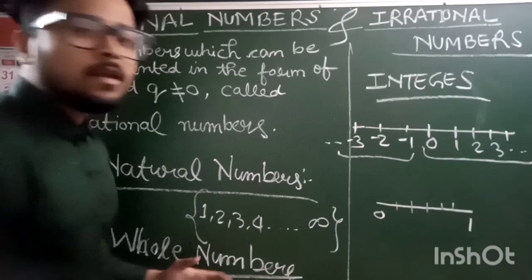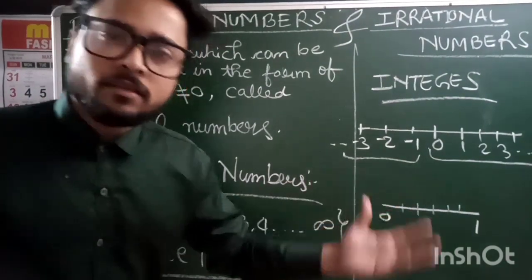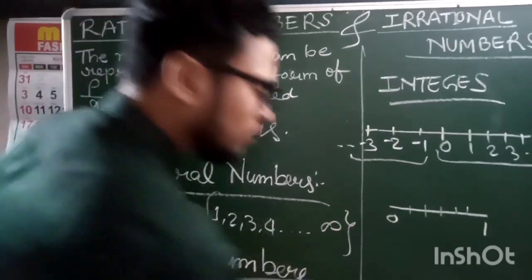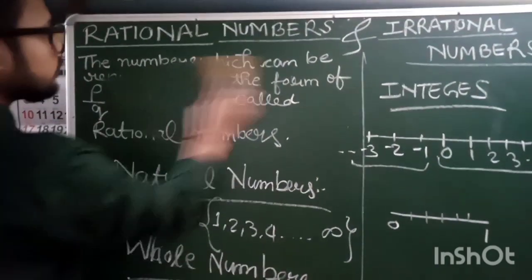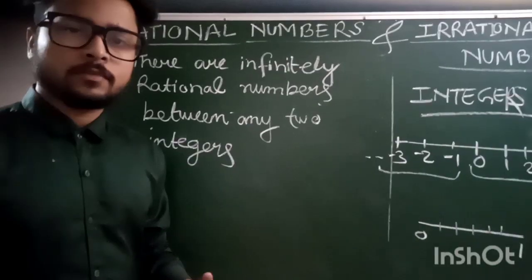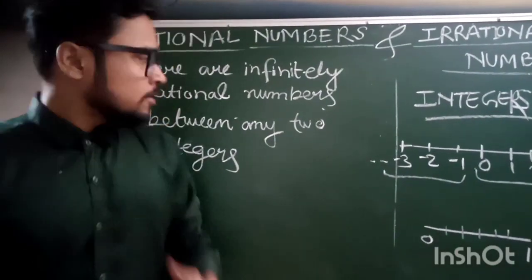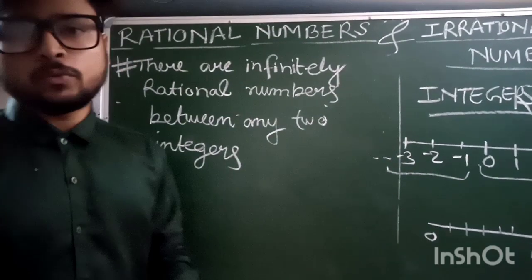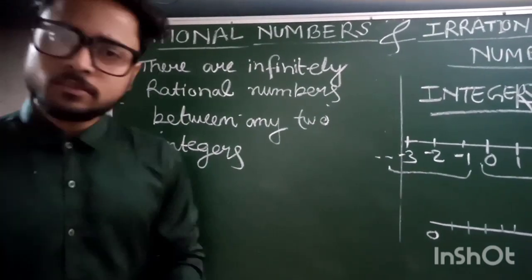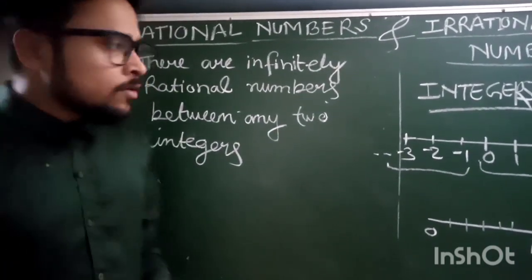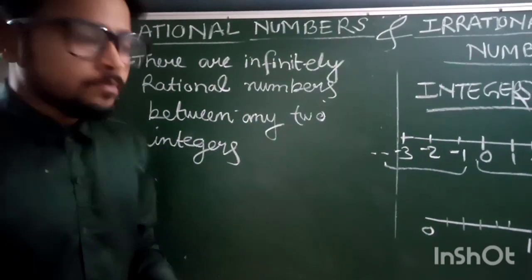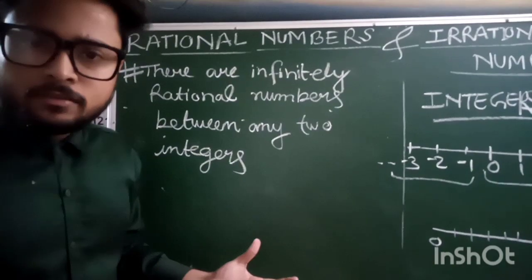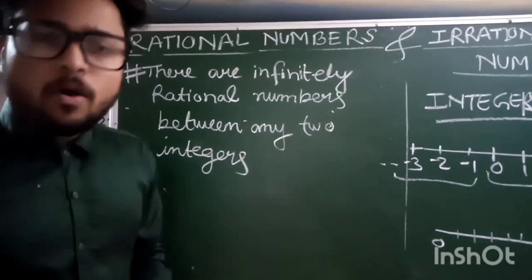So there are infinitely many rational numbers that can lie between any two integers. This is a very important point — there are infinitely many rational numbers between any two integers. By this concept, we have established the order of the number system family.